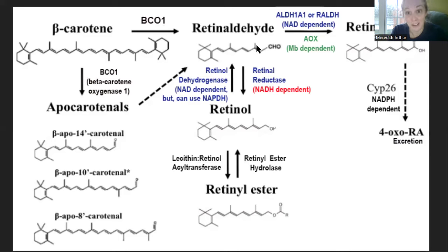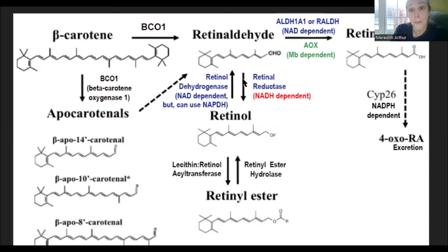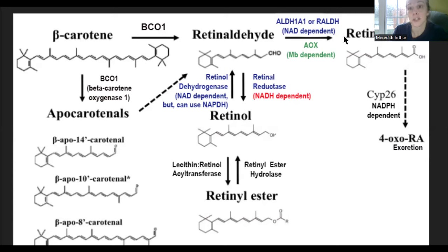Retinol goes to retinol aldehyde in the body using the enzyme retinol dehydrogenase, also called alcohol dehydrogenase, because retinol is a primary alcohol — it has a hydroxyl group on the end. Retinol aldehyde can be converted back into retinol with retinol reductase, which is NADH dependent. So if there's a lot of NADH in the cell, retinol aldehyde may go back to retinol more easily.